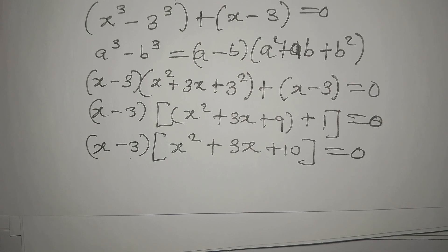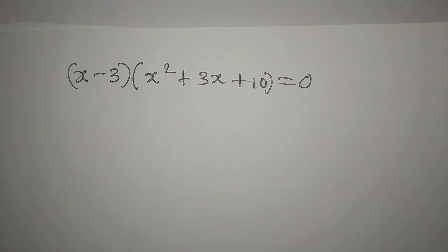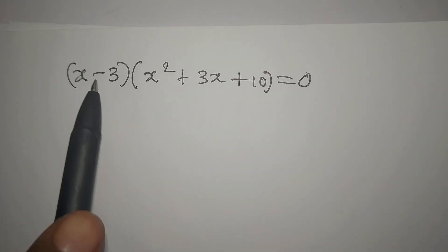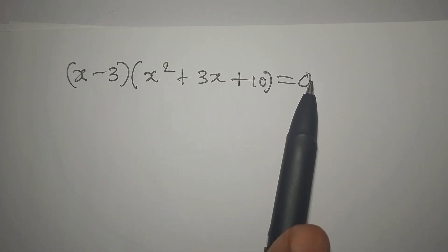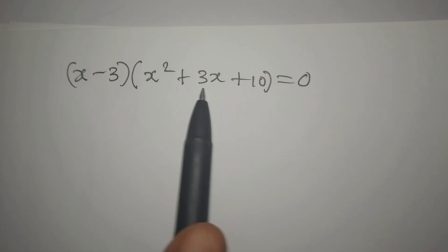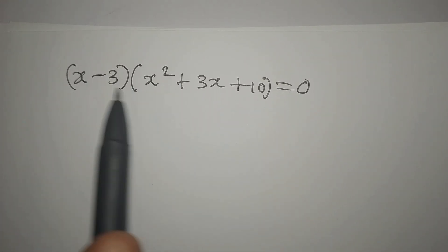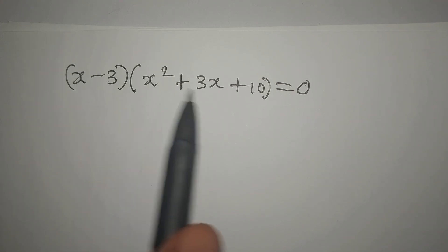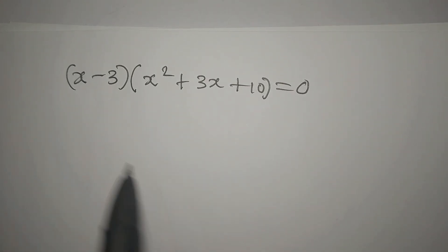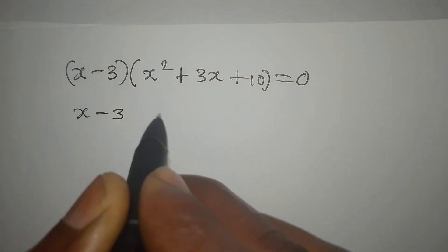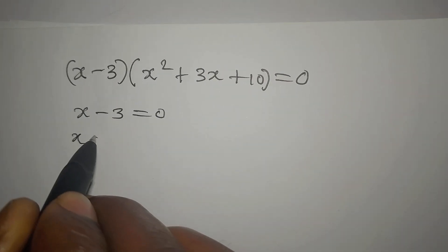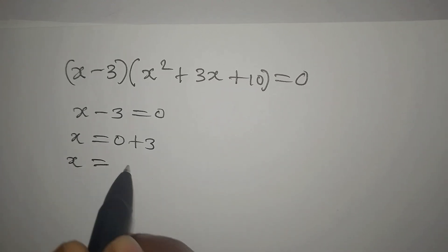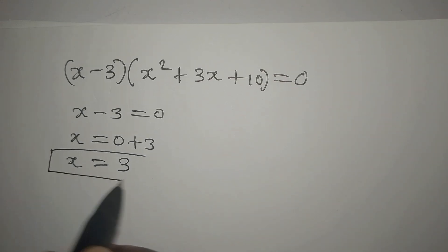Now we are going to apply the zero product rule. We apply the zero product rule when you have two terms that multiply to get 0. This is one term, and this is another term. Multiplying both to get 0 means either this equals 0 or this equals 0, or sometimes both can equal 0. So if x minus 3 is equal to 0, it means that x equals 0 plus 3, and then x is equal to 3. This is one of the values of x.